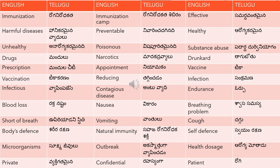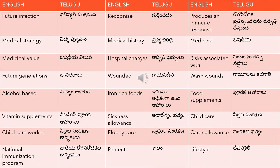Patient is 'rogi'. Future infection is 'bhavishyata sankramana'. Recognize is 'gurtinchadom'. For 'produces an immune response', the translation is 'roga nirodhaka prathispandhananu utpatthi cheshtundhi'.